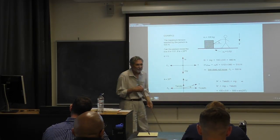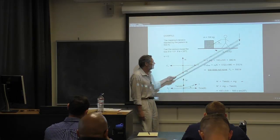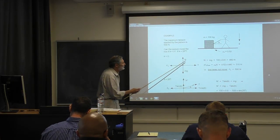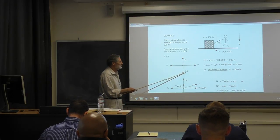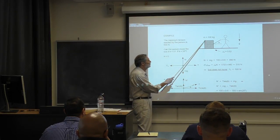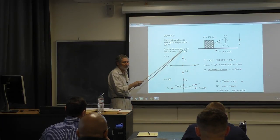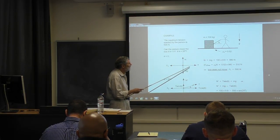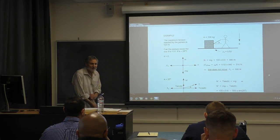Let's do the horizontal case first. For zero degrees, we draw the force diagram with all the forces on the mass. It has weight mg where m is 100 kilograms, a normal force exerted by the surface upward that balances gravity — since there's no acceleration vertically. We're exerting a tension force, and there'll be a static friction force unless it breaks.